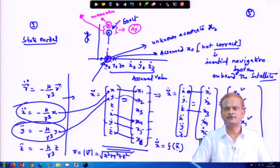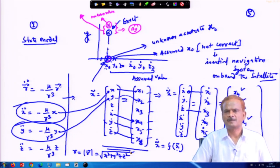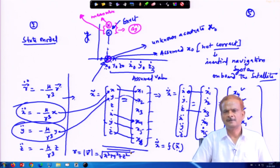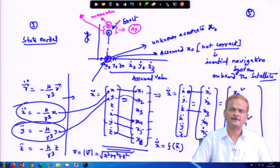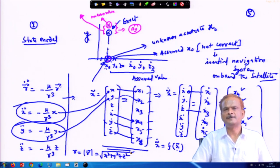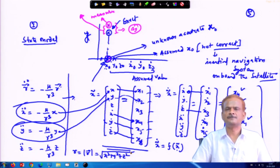With this I conclude today, and in the next lecture we will continue with this state model and see how the orbit determination process evolves. For further reading, you can refer to Howard Curtis's book on space dynamics for engineers, which discusses theoretical methods of orbit determination. The computational method covered here is the one applied in reality for determining the orbit of a satellite. Thank you very much.